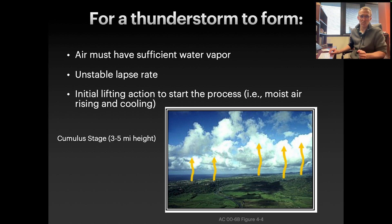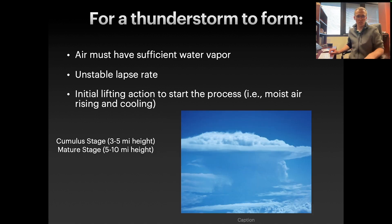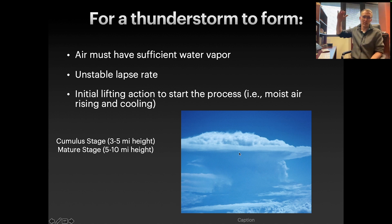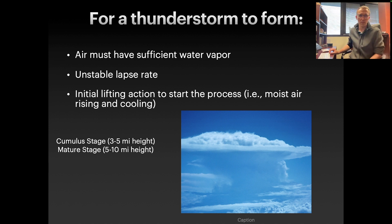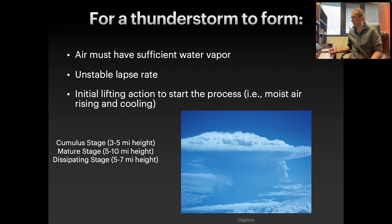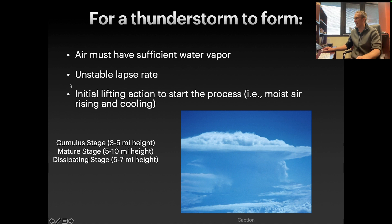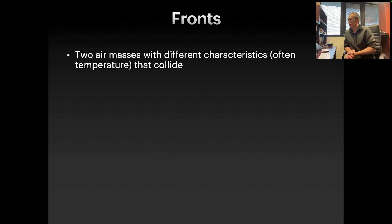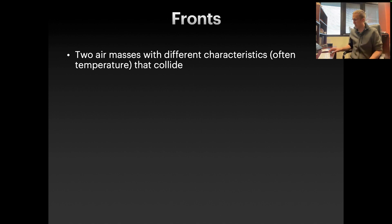There are a couple of stages to thunderstorm formation. The cumulus stage features clouds roughly three to five miles high. The mature stage is full cumulonimbus clouds reaching all the way to the top of the troposphere and hitting the tropopause, spreading out at five to ten miles in height. Then comes the dissipating stage, where clouds are somewhat lower but still quite high. The initial lifting action that starts this whole process is often provided by fronts.